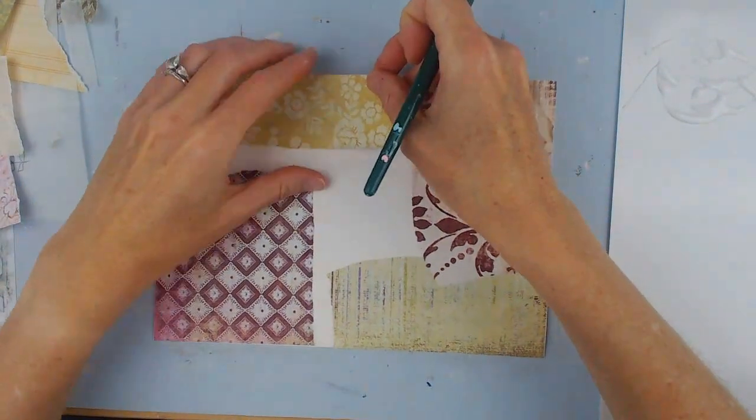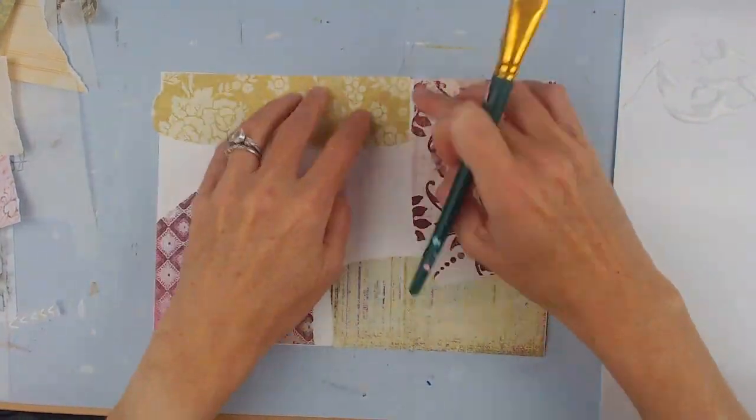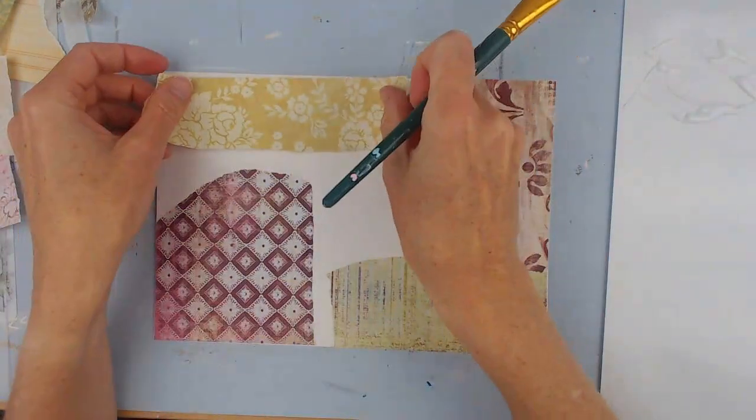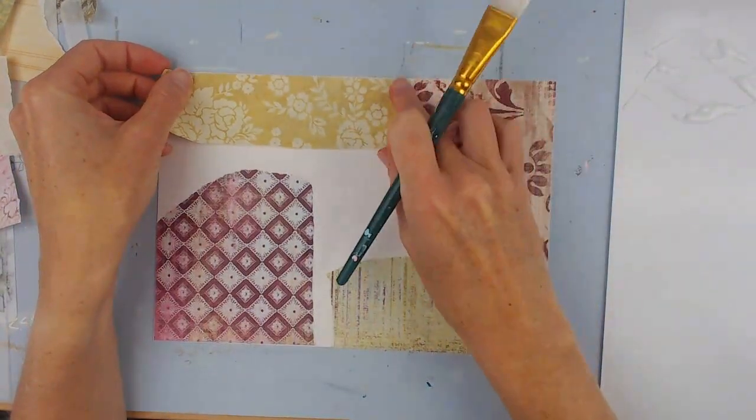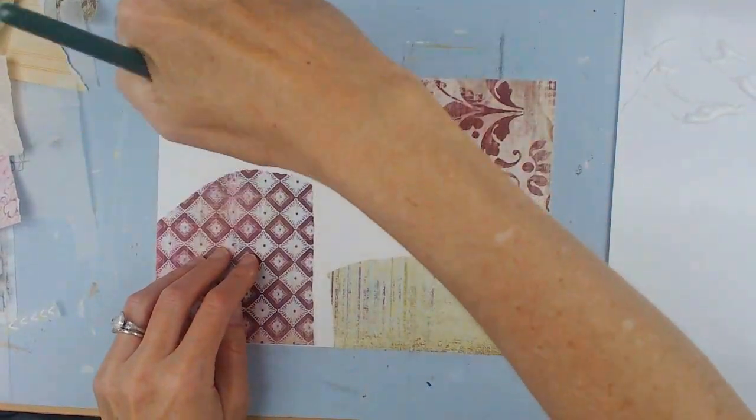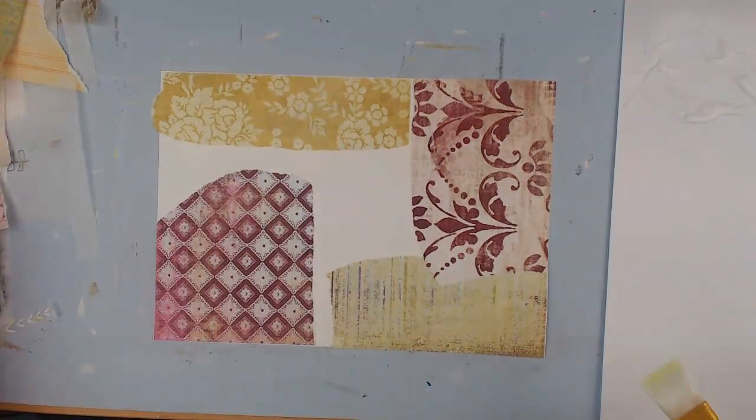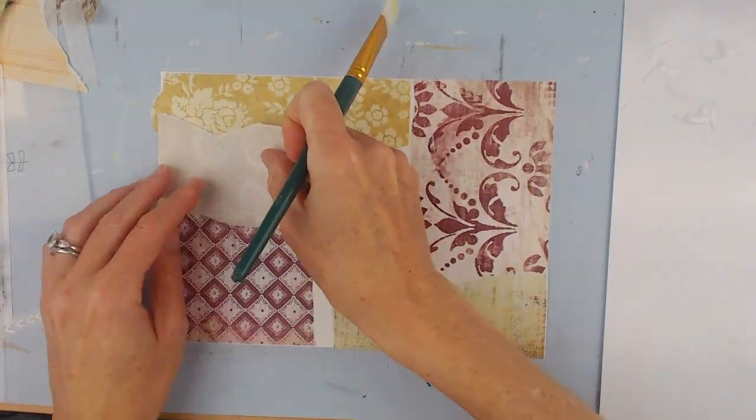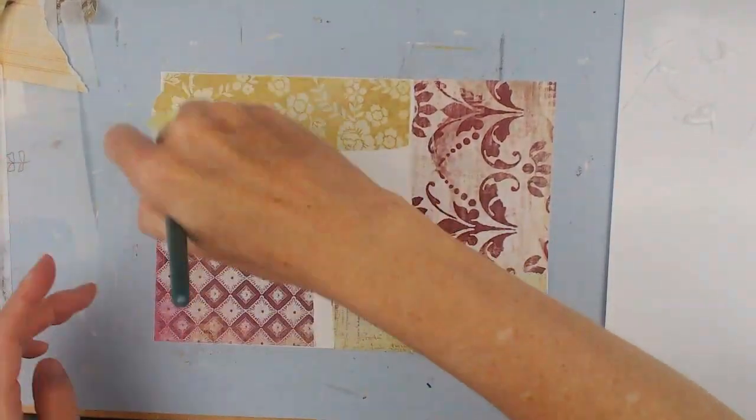So these are some of the papers I chose for today, a kind of different color scheme for me. I like to try to do that once in a while to challenge myself, because I definitely err on the side of pinks and light blues.